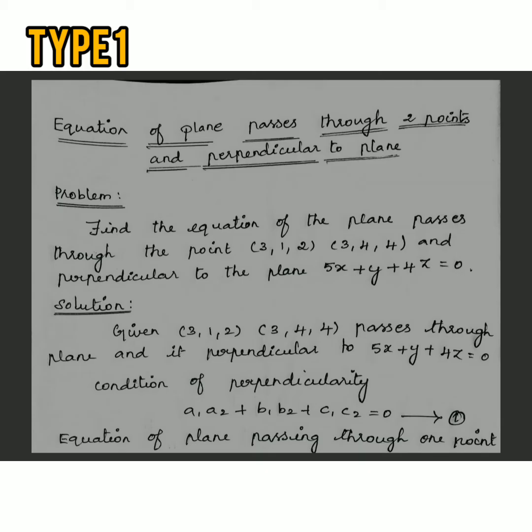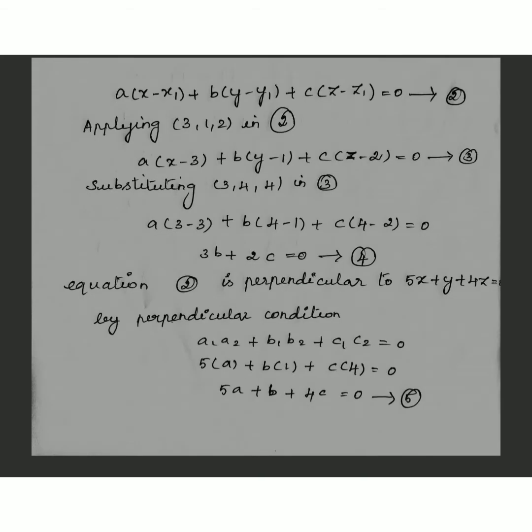We know the perpendicularity condition. The condition for perpendicularity is: a1·a2 + b1·b2 + c1·c2 = 0. Also, the equation of a plane passing through any point can be written as a(x − x1) + b(y − y1) + c(z − z1) = 0. Take this as equation 2.